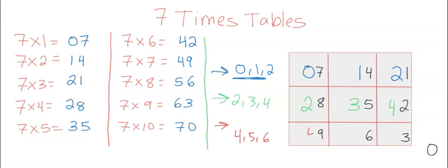And then I'm going to put a 4 in front of the 9, a 5 in front of the 6, and a 6 in front of the 3. And then the 0, I'll put a 7 in front of it, okay?